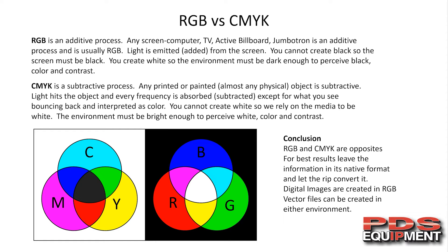I was in Vegas a couple of weeks ago working, and Vegas of course is known for glitz and glamour. They had an active billboard you could see plain as day in broad daylight — I was absolutely amazed. Twenty-five years ago we would not have thought that possible. So RGB is an additive process. CMYK is a subtractive process — any printed, painted, or almost any physical object is subtractive. In the physical world the only exceptions are plants or animals that actually produce light.